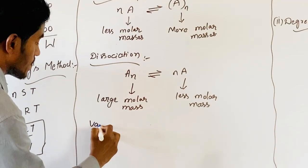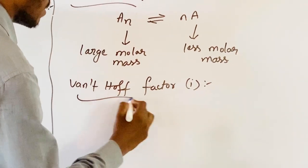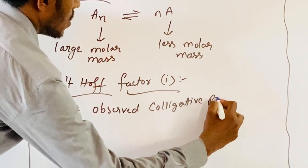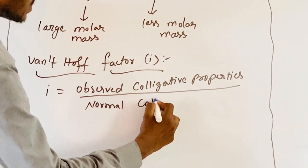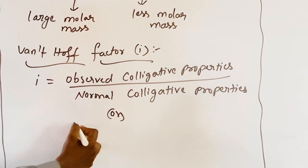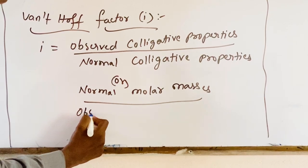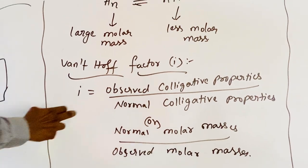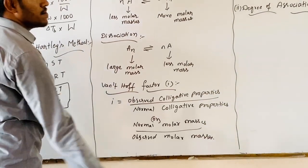Now coming to the Van't Hoff Factor, represented by the symbol i. i equals observed colligative properties divided by normal colligative properties. In the same way, it can also be written as normal molar masses divided by observed molar masses. Here the comparison is: observed should be in the numerator with respect to colligative properties, and observed should be in the denominator with respect to molar masses.